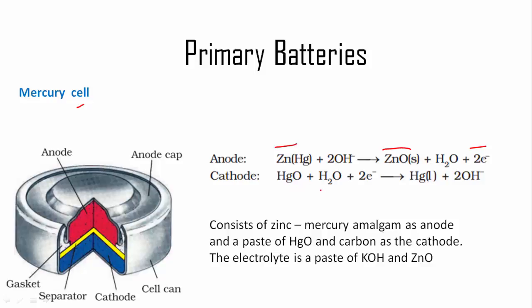At cathode, mercury oxide reacts with water and takes those two electrons to produce mercury. It consists of zinc-mercury amalgam as anode and a paste of mercury oxide and carbon as cathode. The electrolyte is a paste of potassium hydroxide and zinc oxide.